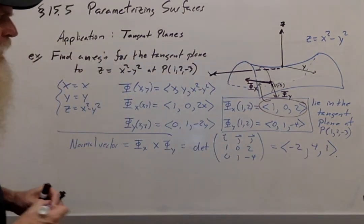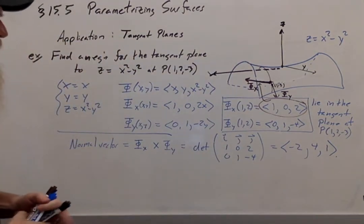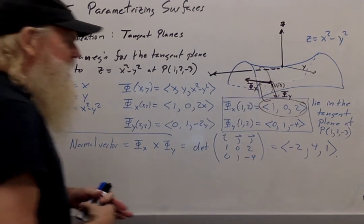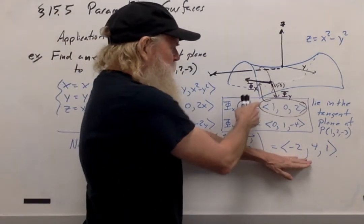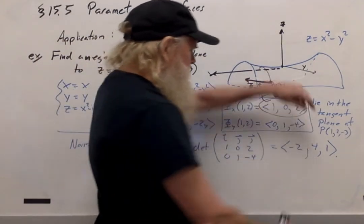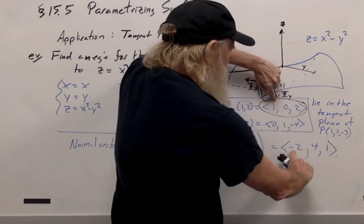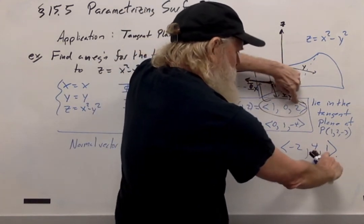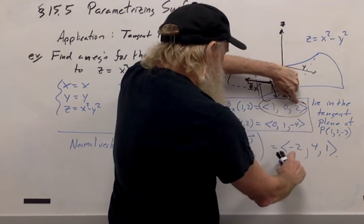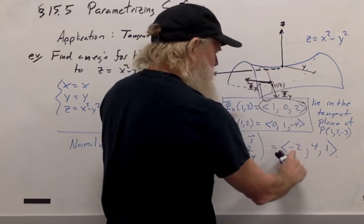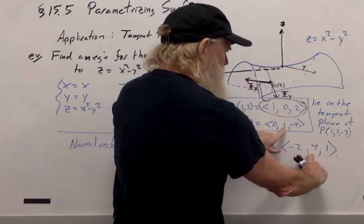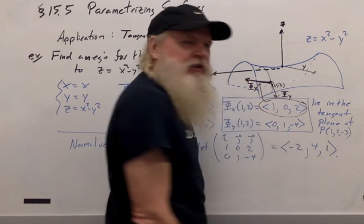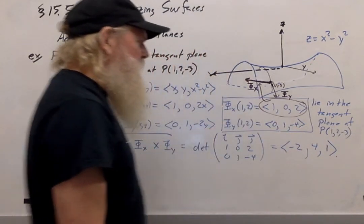Now, remember, a great way to do a spot check to see whether your normal vector really is perpendicular is we can dot this with each of these two vectors and make sure that we get 0. Taking the dot product, -2 plus 0 plus 2 is 0. So this is perpendicular to d phi dx, and 0 plus 4 minus 4 is also 0. So it's perpendicular to d phi dy.